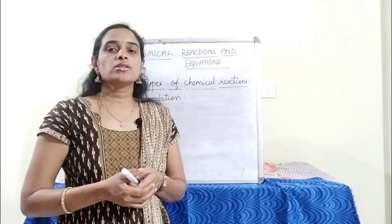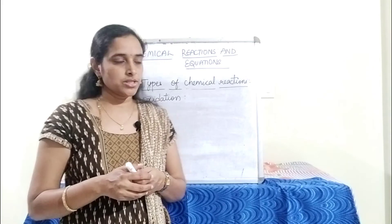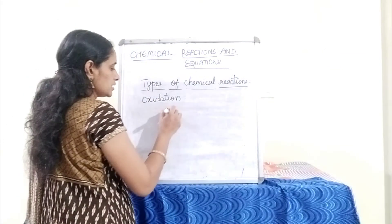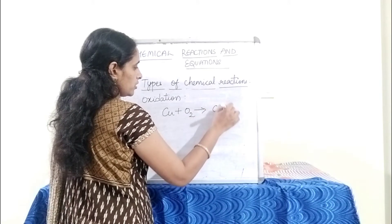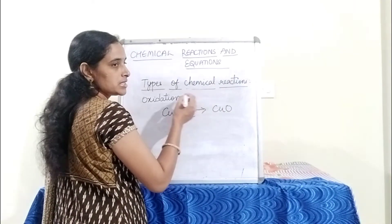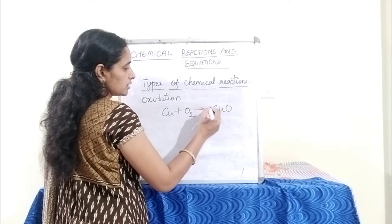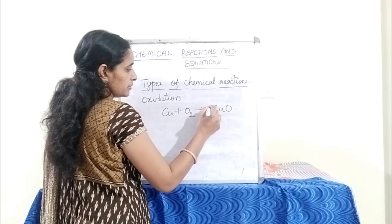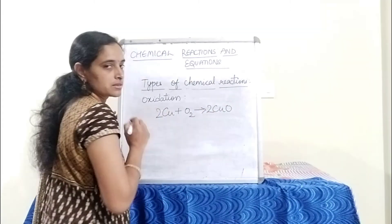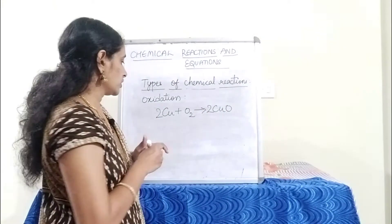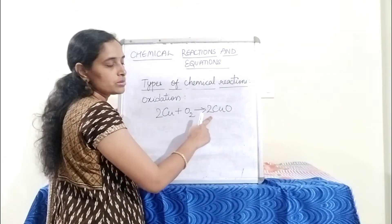Oxidation is the process of gaining oxygen during a reaction. An example is copper + O2 → copper oxide. Using the balancing method we learned, oxygen has the most atoms so we balance it first, then the metal. The balanced equation is 2Cu + O2 → 2CuO.